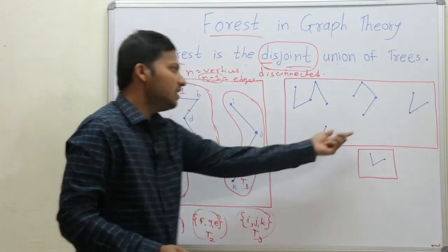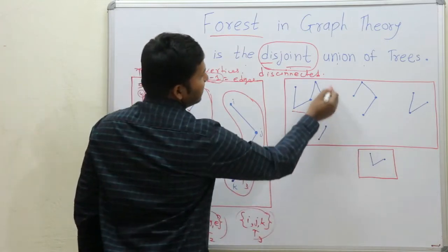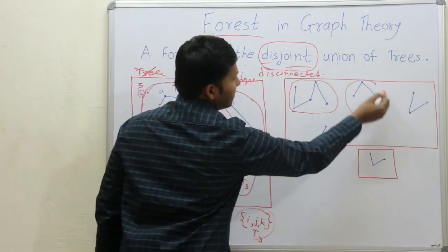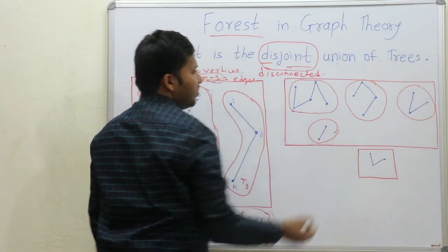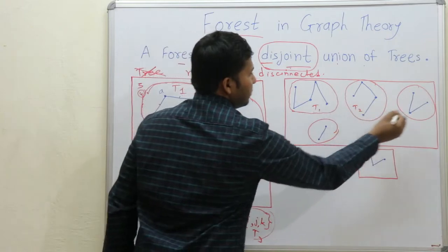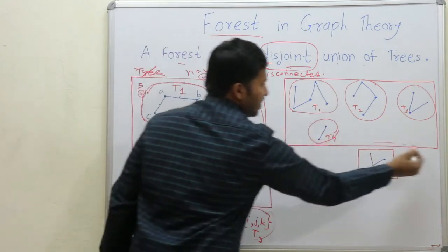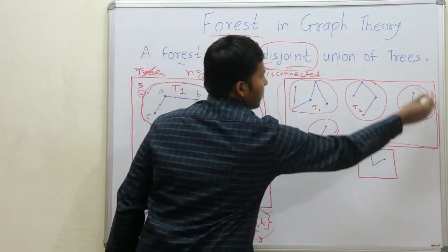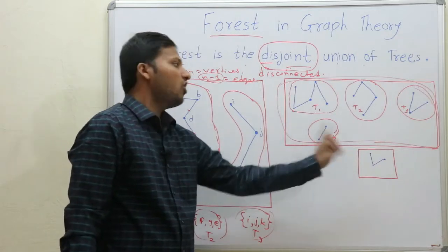Here is another forest. It has one component, another component, a third component, and a fourth component. So individually they are trees — T1, T2, T3, and T4. But this total union of trees — this total graph — will be called a forest.